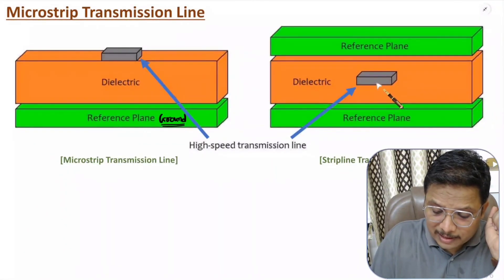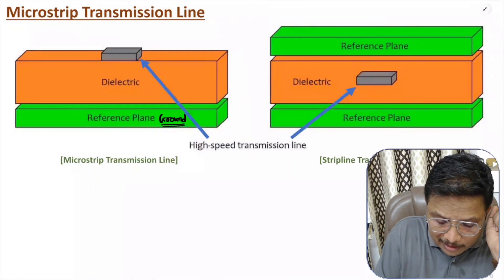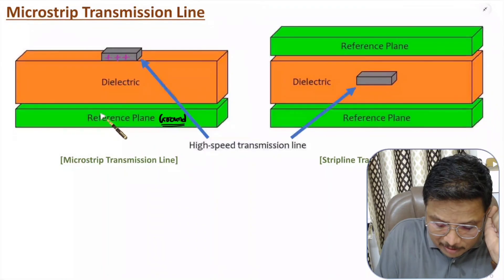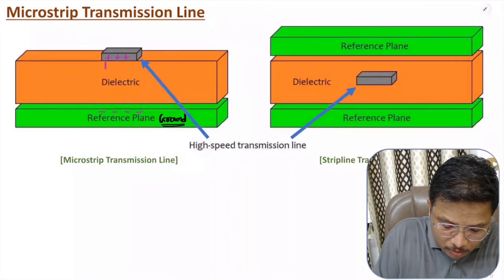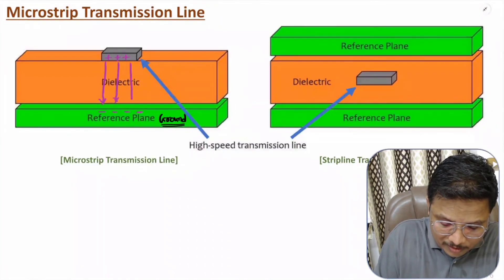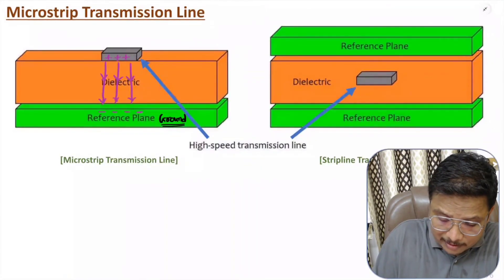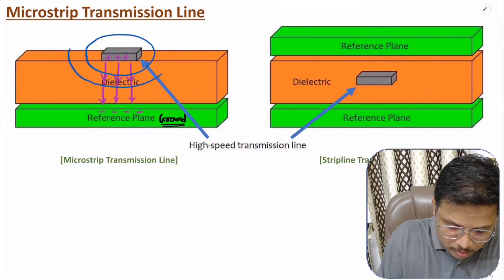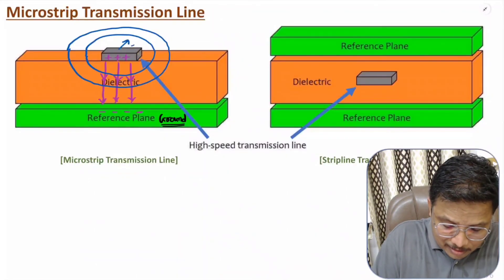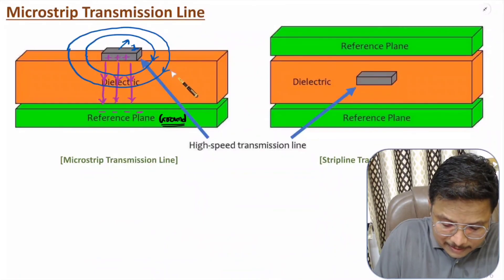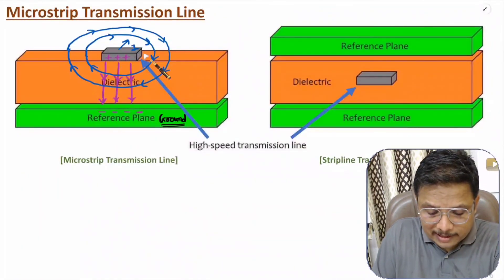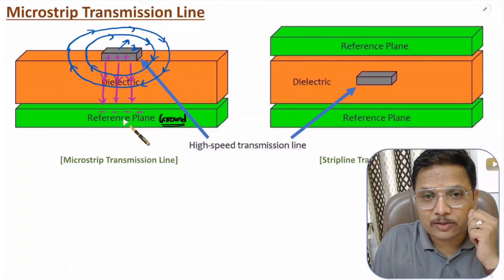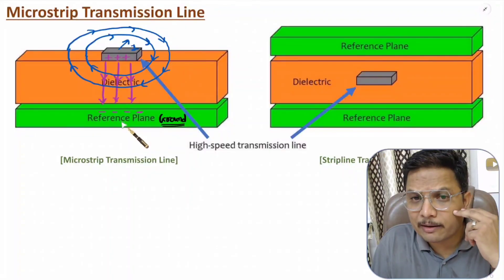For the microstrip transmission line, if current on the strip is positive then ground is negative. Electric field emerges from the positive strip and goes towards the ground. Magnetic field revolves as per the right-hand thumb rule. For more details on microstrip transmission line, you can go through my playlist on antennas and wave propagation, where I have explained microstrip antenna in great detail — microstrip transmission line is used to provide signal to microstrip antenna.